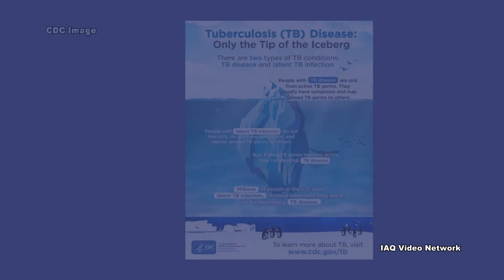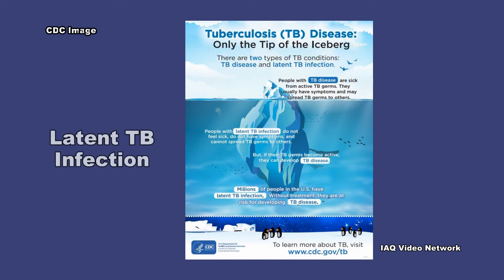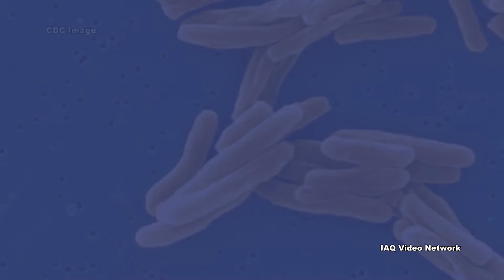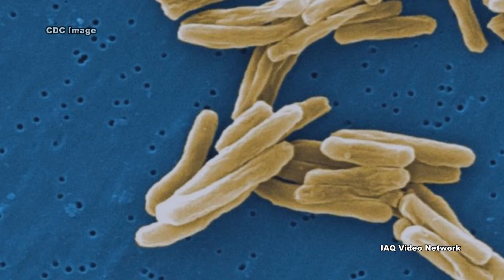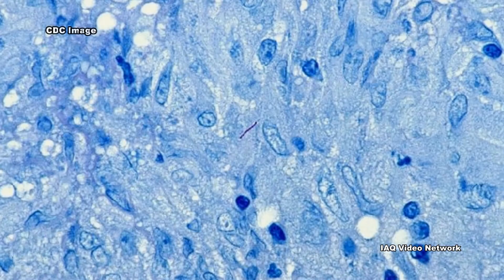When Mycobacterium tuberculosis lives in the body without making a person sick, it is called latent TB infection. People with latent TB infection have no symptoms and don't feel sick. Many people who have latent TB infection never develop the disease. Other people may get sick years later when their immune system becomes weak for another reason. For those who do develop TB disease, their immune system can't stop the bacteria from multiplying in their body.